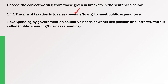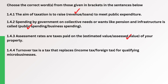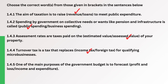Question. Spending by government on collective needs or wants like pensions and infrastructure is called Public Spending. The correct answer is Public Spending. Question. Assessment rates are taxes paid on the assessed value of your property. The correct answer is Assessed value. Question. Turnover tax is a tax that replaces Income tax for qualifying micro-businesses. The correct answer is Income tax. Question. One of the main purposes of the government budget is to forecast income and expenditure. The correct answer is Income and Expenditure.